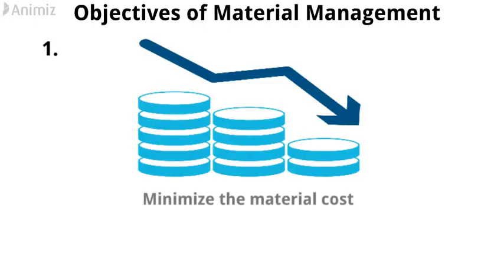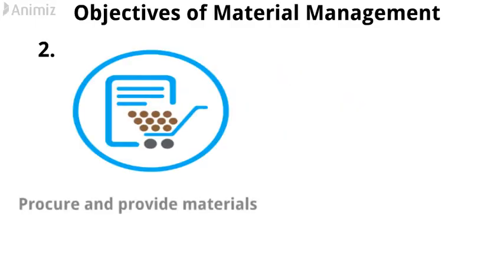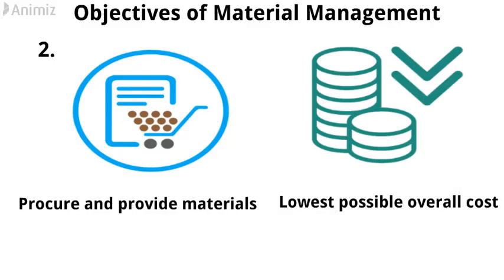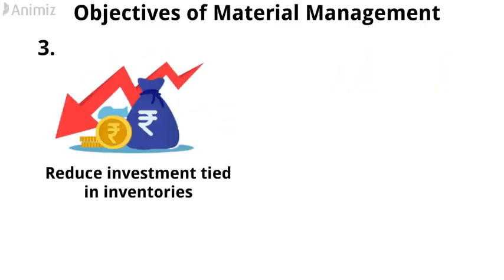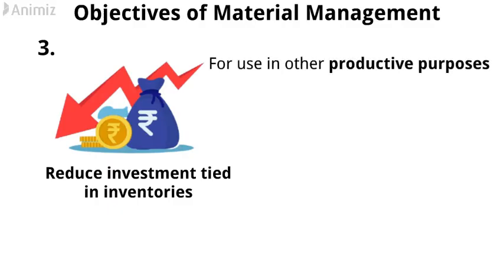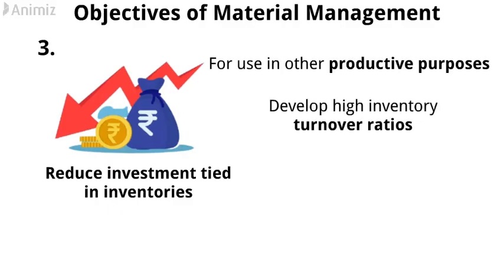Now come to the objectives of material management. 1. To minimize the material cost. 2. To procure and provide materials of desired quality when required at the lowest possible overall cost. 3. To reduce investment tied in inventories for use in other productive purposes, and develop high inventory turnover ratios.